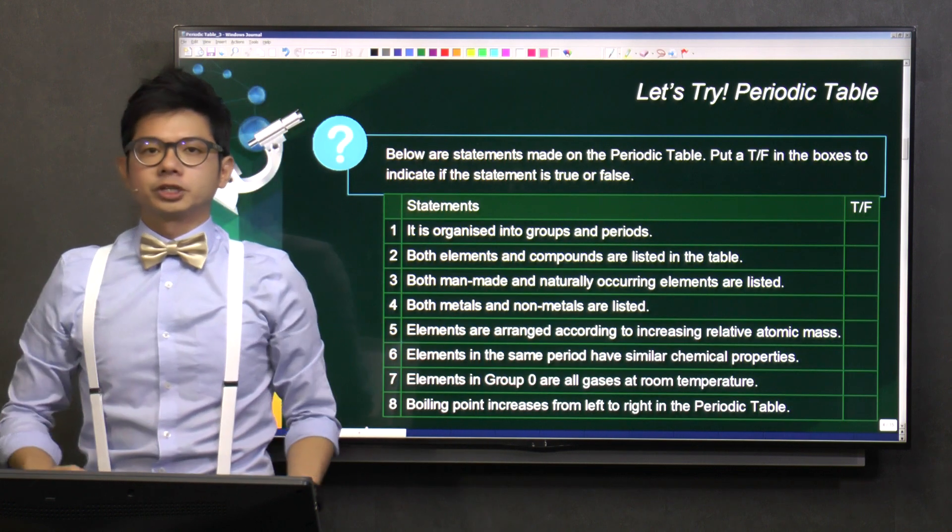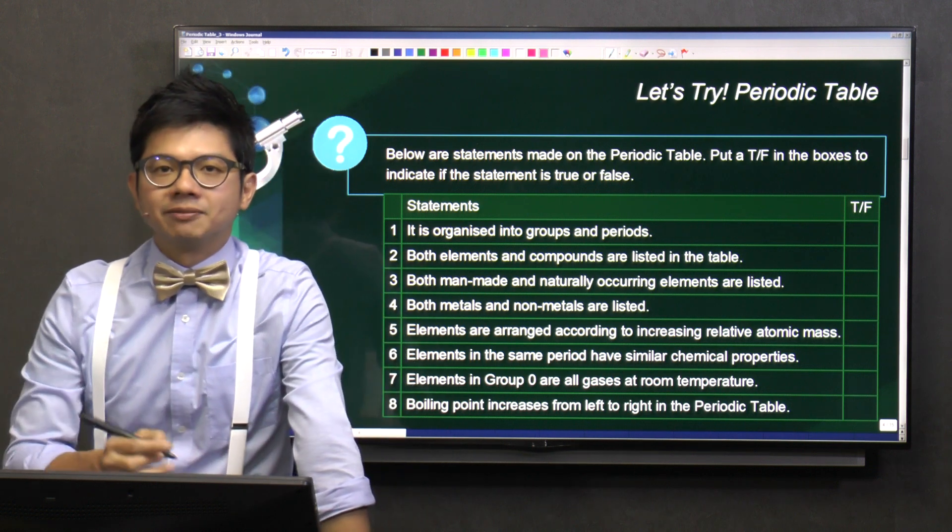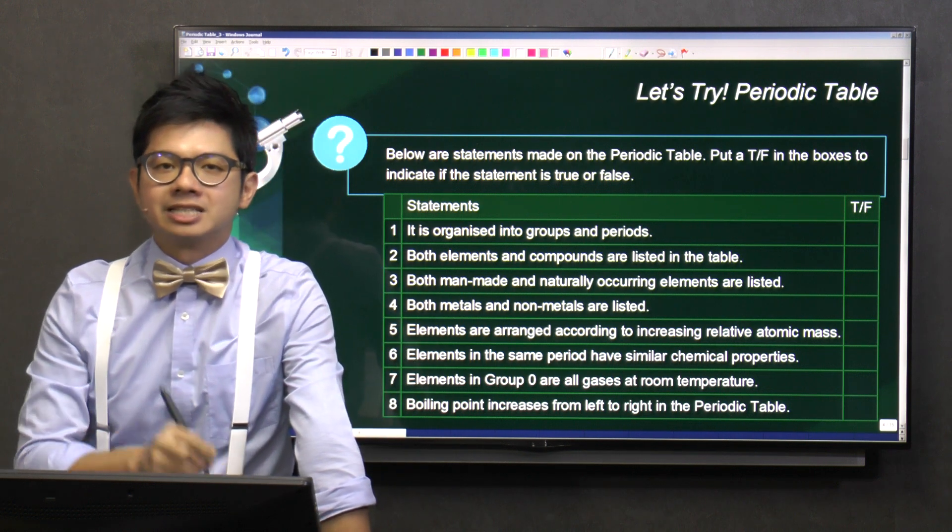Next question. I have some true-false questions here to test your understanding. All together, I have 8 statements. If you can get 8 out of 8, that means your understanding on periodic table is there. Let's try.